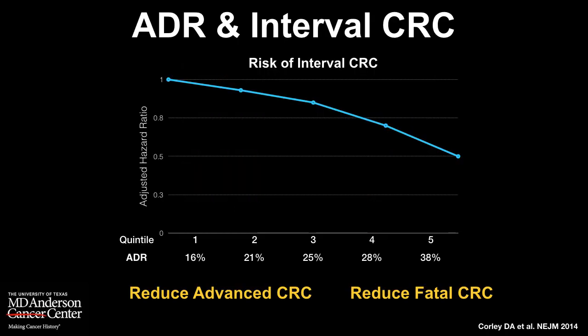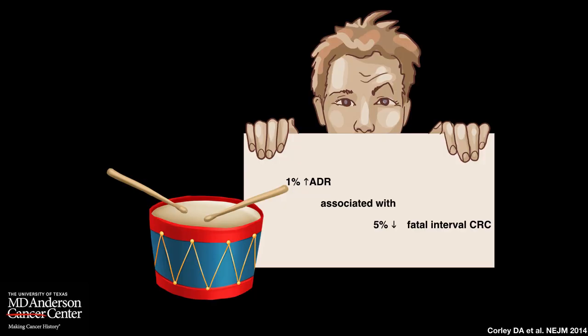Why is adenoma detection rate important? Dr. Coley and others have shown that those who have a low adenoma detection rate are likely to have a higher incidence of interval colorectal cancer, higher advanced cancers, and fatal cancers. If you go to a practice with a very high adenoma detection rate, your chance of developing interval cancer, advanced cancer, and fatal cancer is likely to be low. For every 1% increase in adenoma detection rate, it is associated with a 5% decrease in fatal interval cancers.